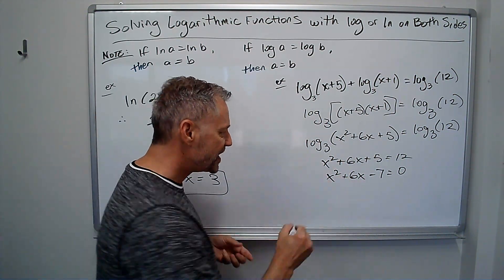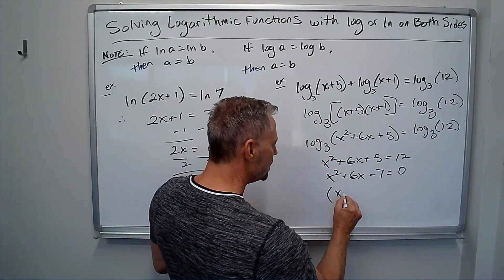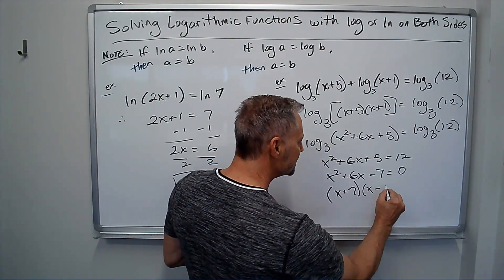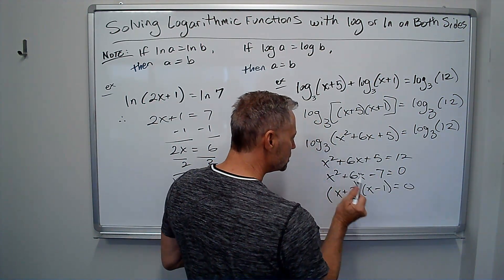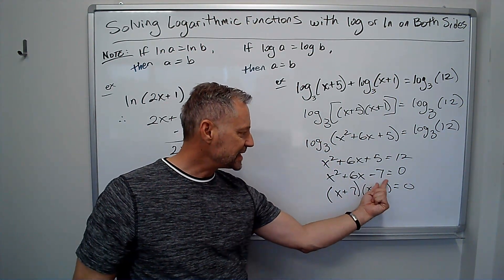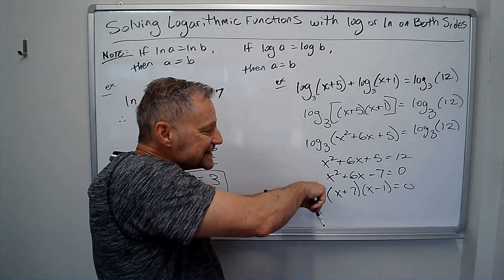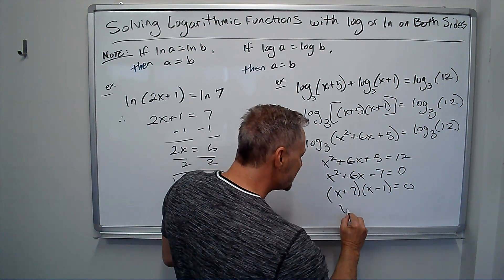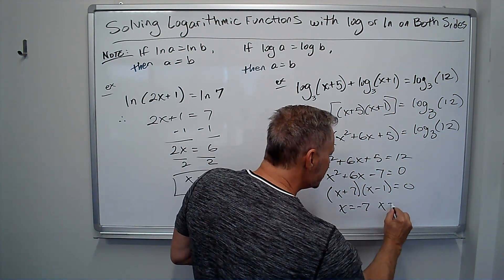And then this factors out x plus 7 times x minus 1 equals 0. Right? Negative 7 and 7 multiply to negative 7 and add to 6. So setting each of those equal to 0, I get x equals negative 7 and x equals 1.